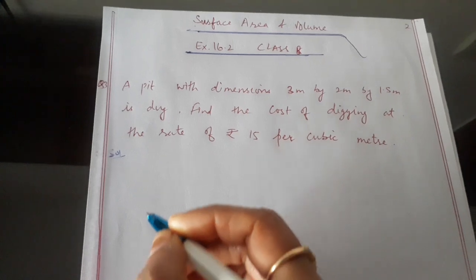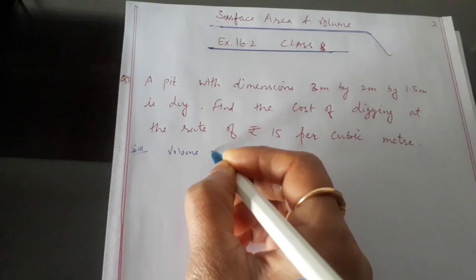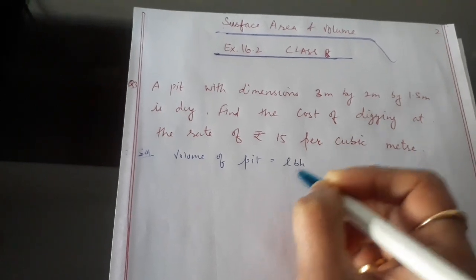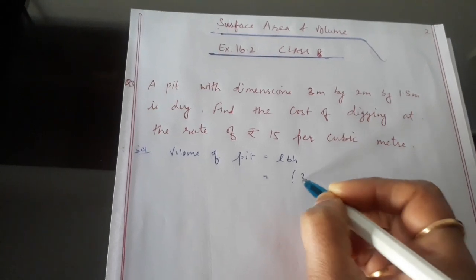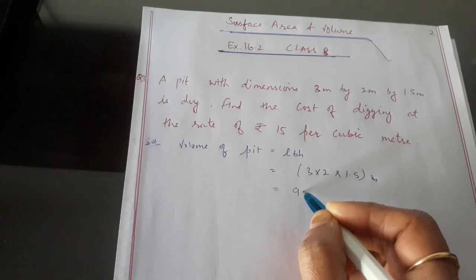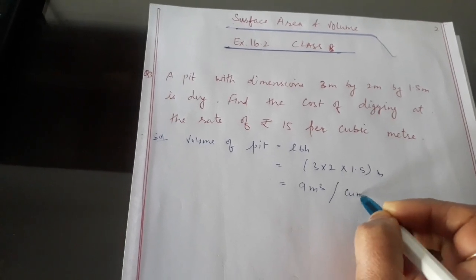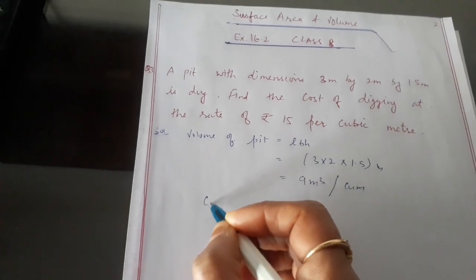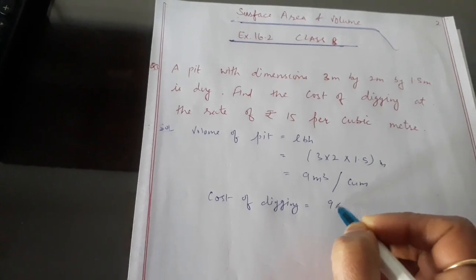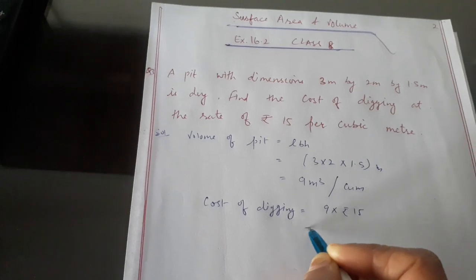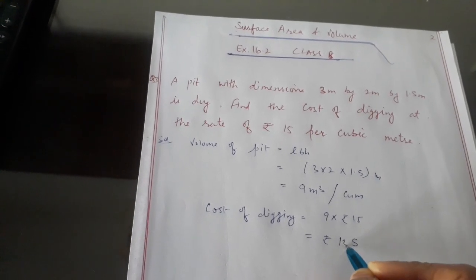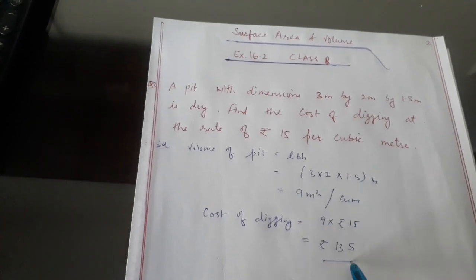First of all, we will find the volume of the pit. Volume of pit equals length into breadth into height, so we write 3 into 2 into 1.5 meters, that is 9 cubic meters. Now the cost of digging will be 9 into rupees 15, so 9 fives are 45, 9 ones are 9, giving us 135. So the cost of digging the pit is rupees 135.